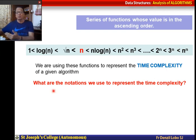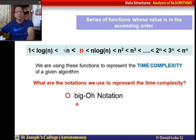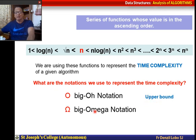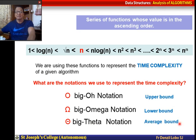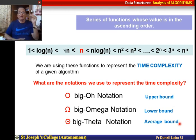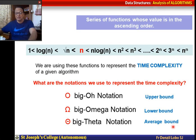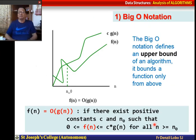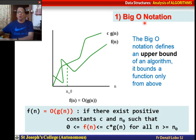The notations we use to represent time complexity are: Big O to represent the upper bound, Omega notation to represent the lower bound, and Theta notation to represent the average bound. Upper bound is represented by Big O of g(n), Omega of g(n) gives the lower bound, and Theta gives the average bound.